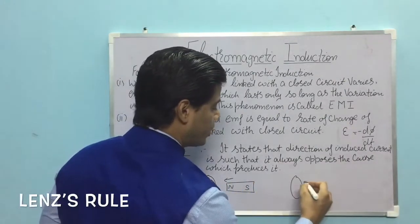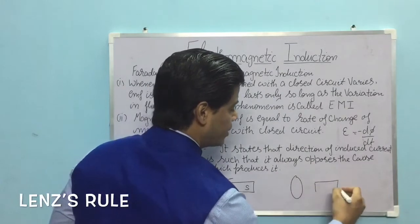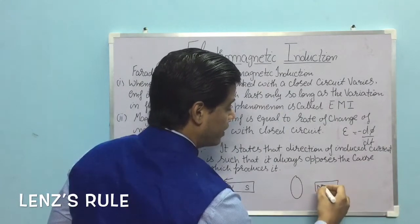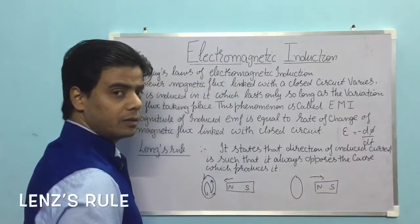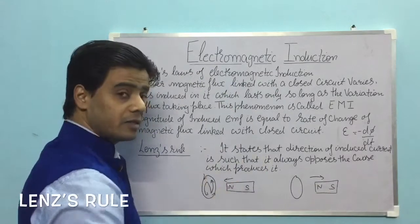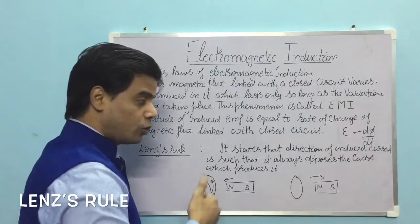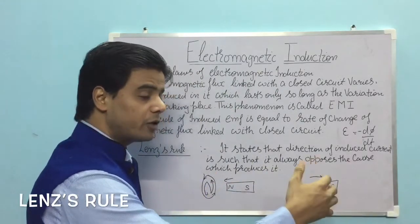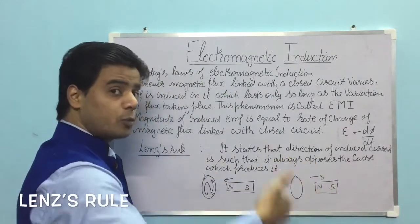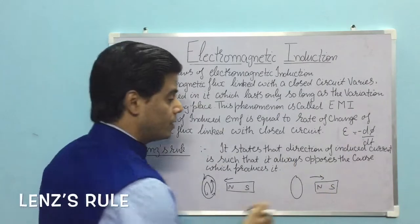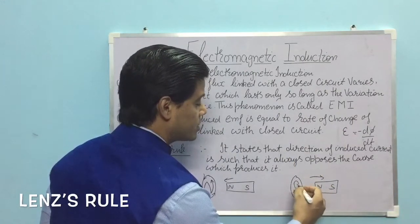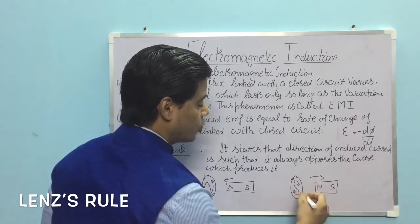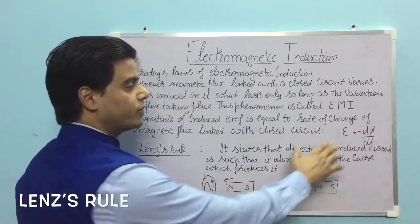Similarly, if the magnet is taken away with its north pole moving away from the coil, the cause is the north pole going away. To oppose this, a south polarity must be developed on that face, which means the current will be clockwise. This is the meaning of the negative sign and the opposition in Lenz's rule.